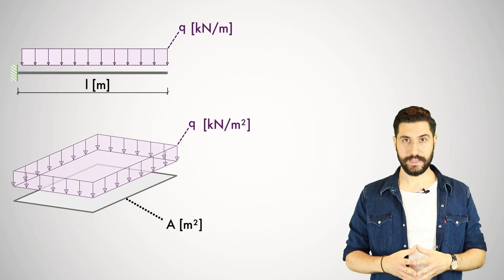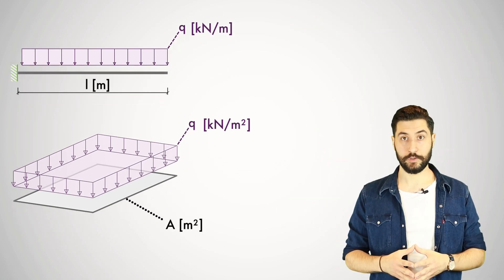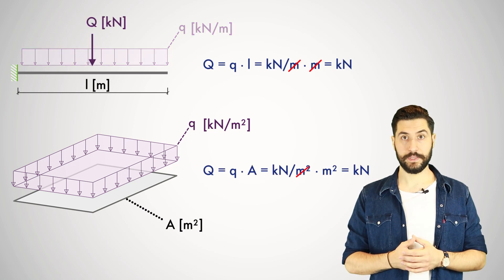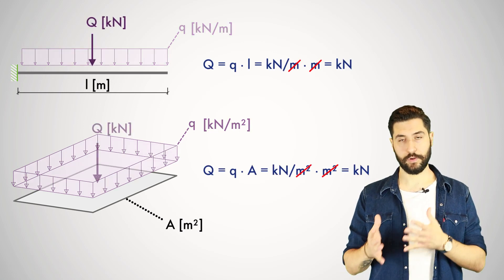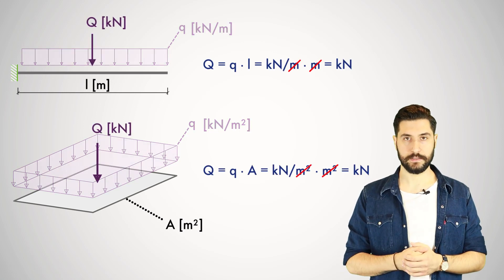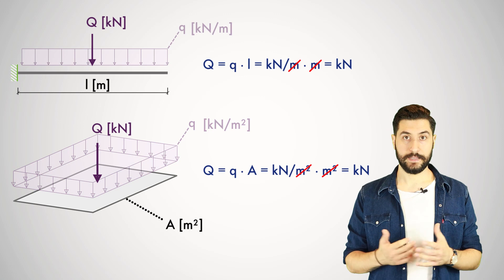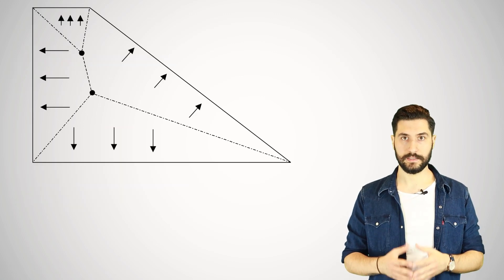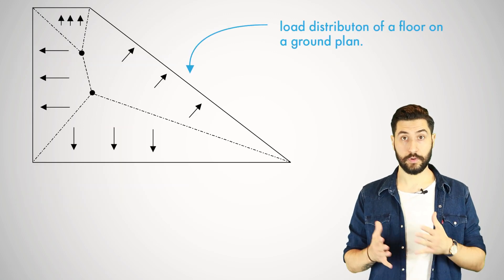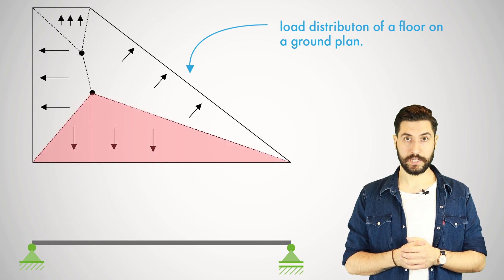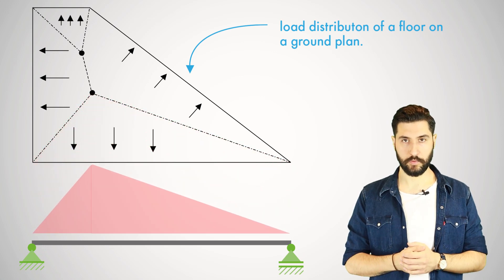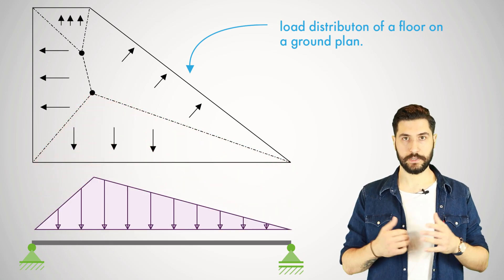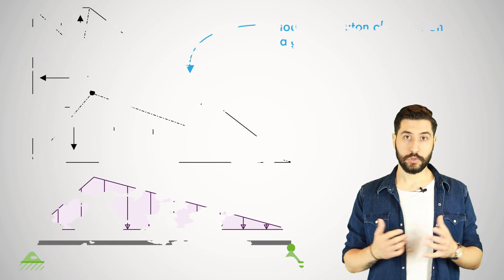You can find the resulting concentrated load from line loads and surface loads by multiplying by the respective length or area. However, there are not only constant line or surface loads — trapezoidal or triangular loads are also very common in structural design, for example from the load distribution of a floor.